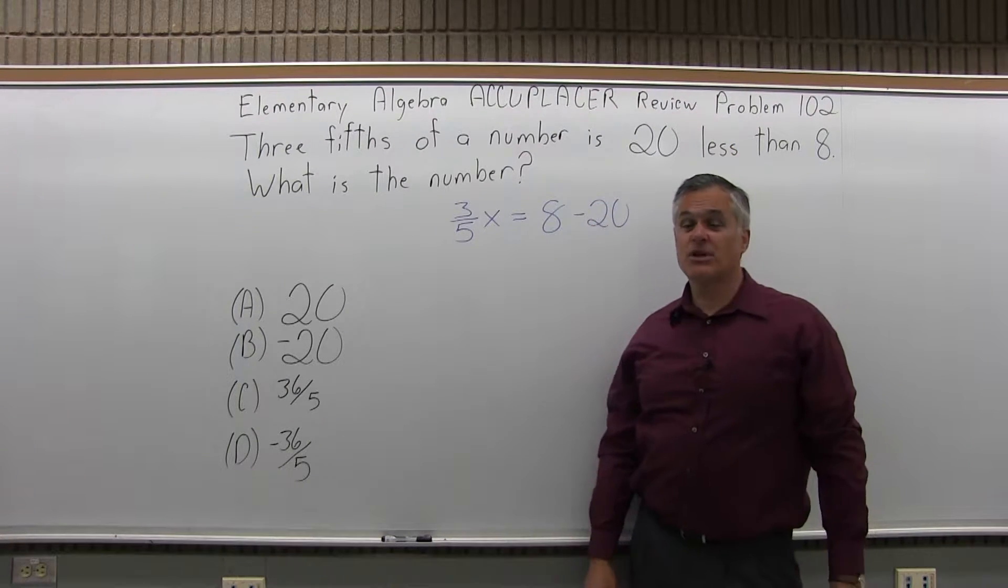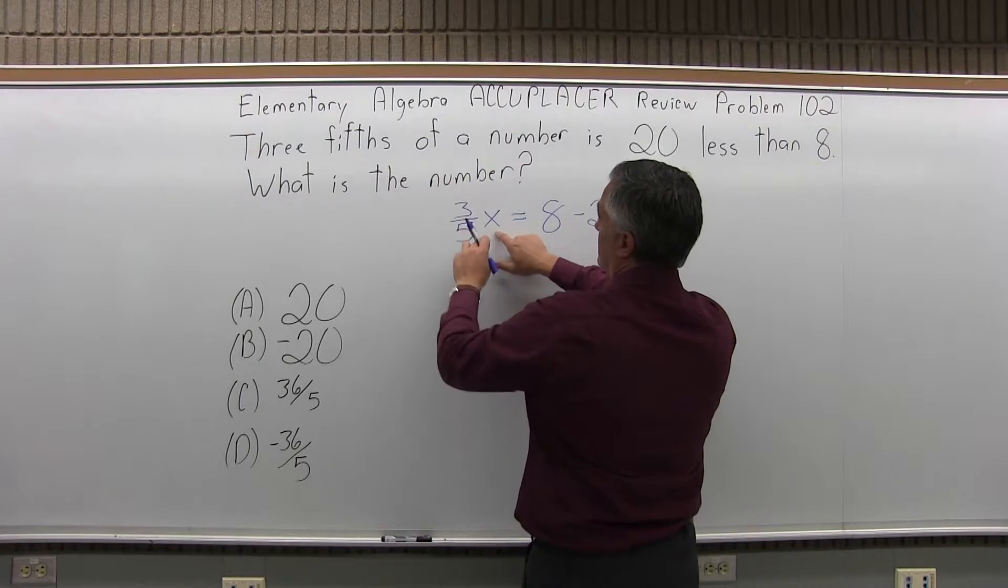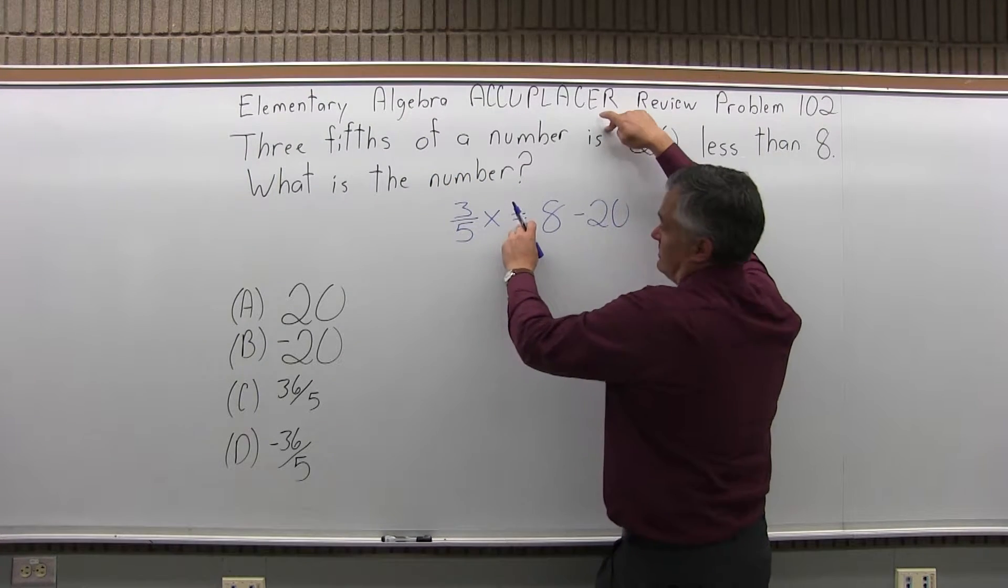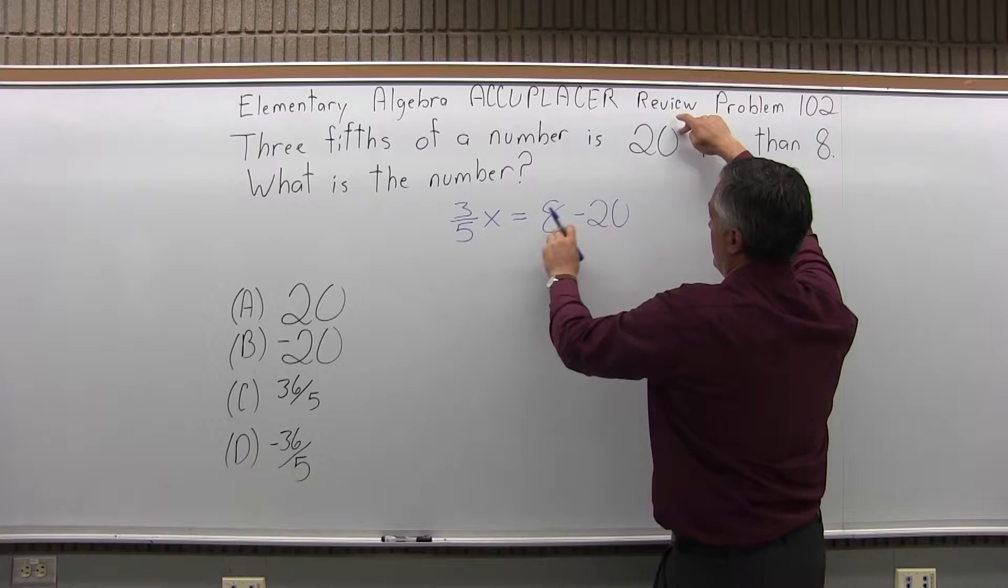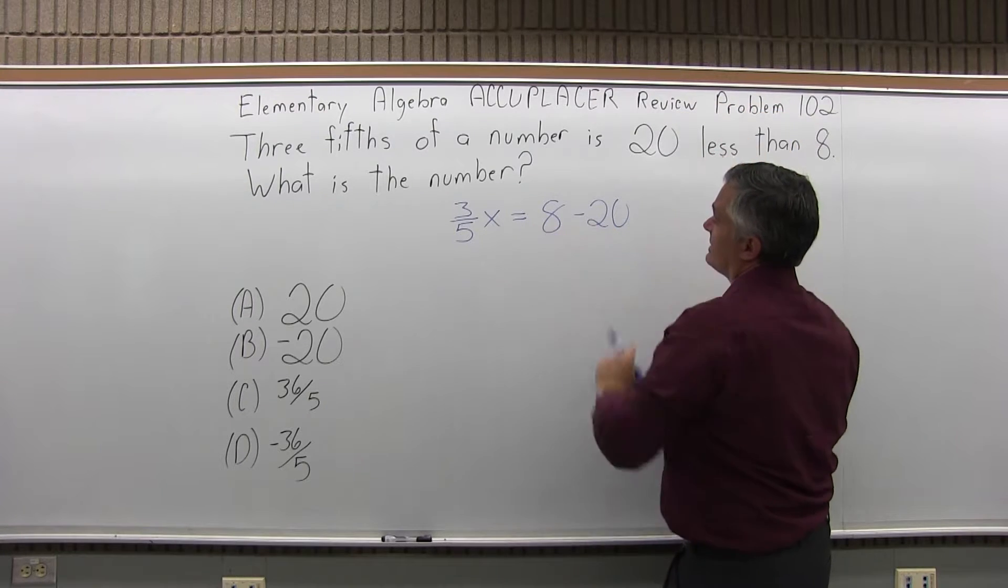So that sets up the equation. You kind of read it through: three-fifths of a number, there's my three-fifths x, is going to be an equals, and 20 less than 8. So that's the equation.